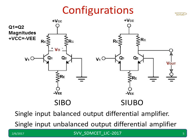Similarly, for the single input configuration, I give only one input to either the Q1 base or Q2 base. Balanced output and unbalanced output remain the same definition: if I take across two collectors it is balanced, otherwise it is unbalanced.